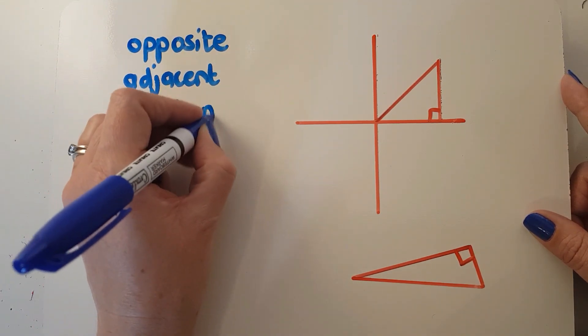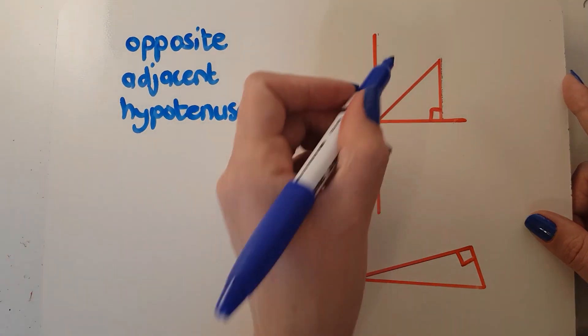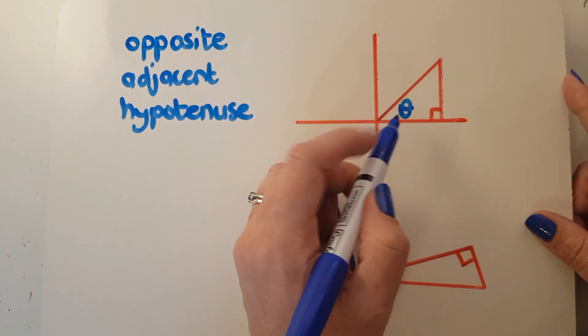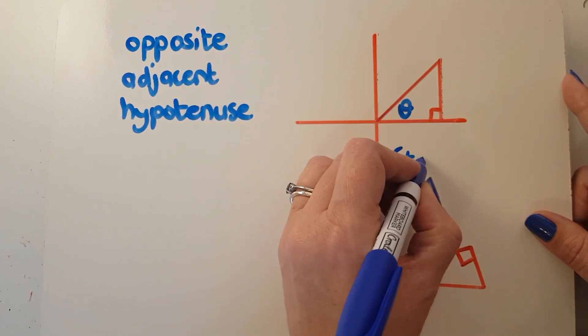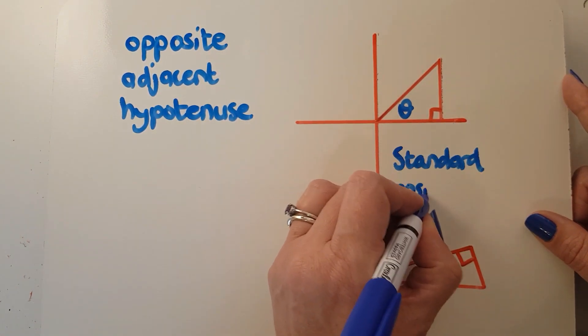Now you can tell from my diagram on the right that the hypotenuse is clearly the same as the radius. So in this diagram, with θ in standard position, the x, y, and r work.